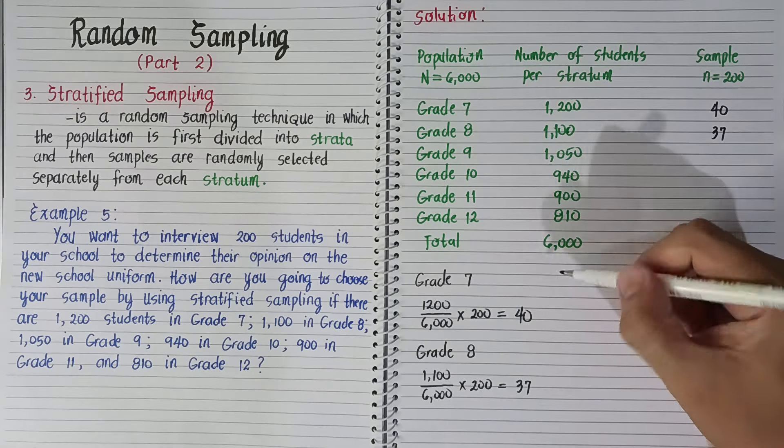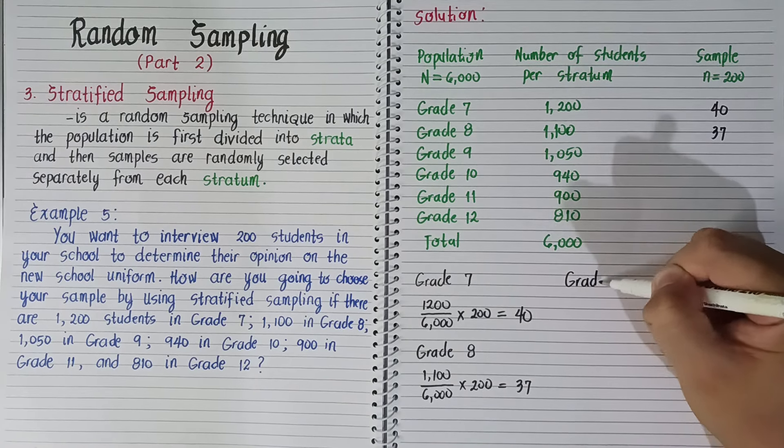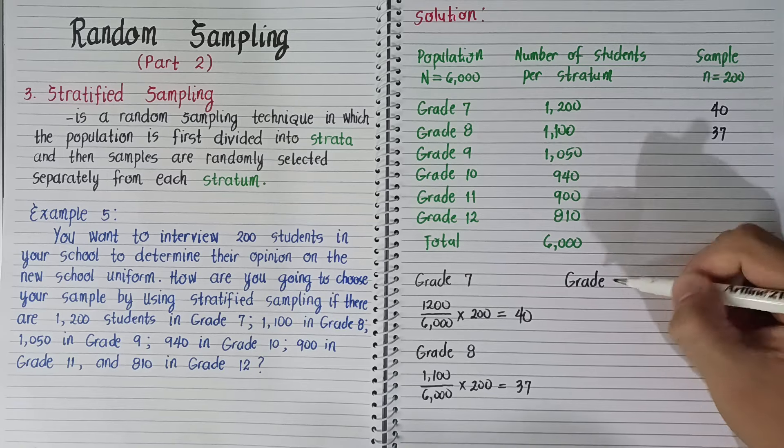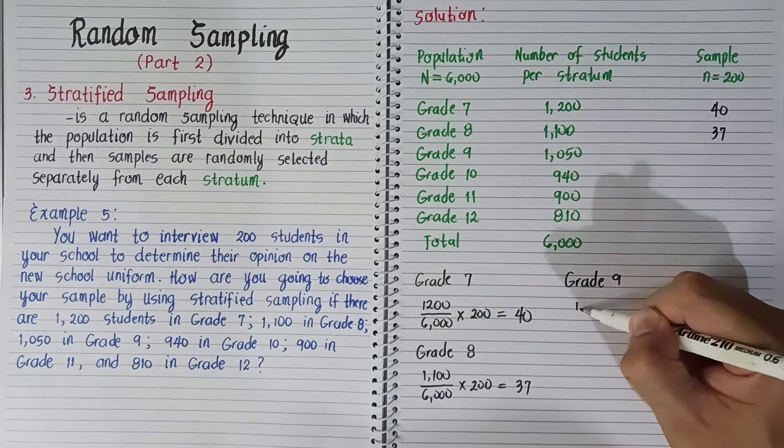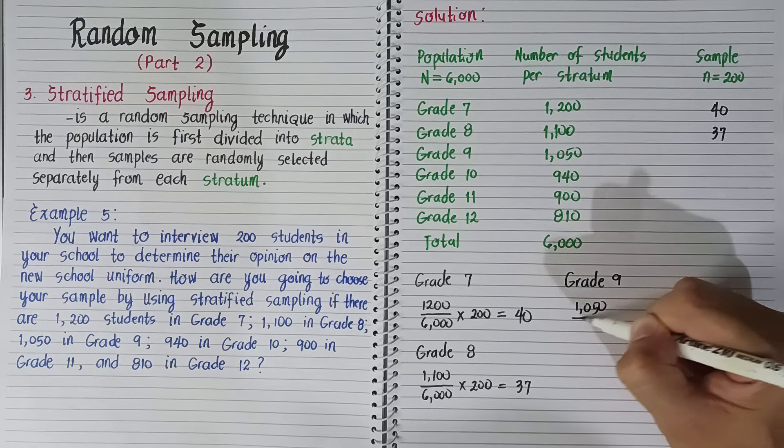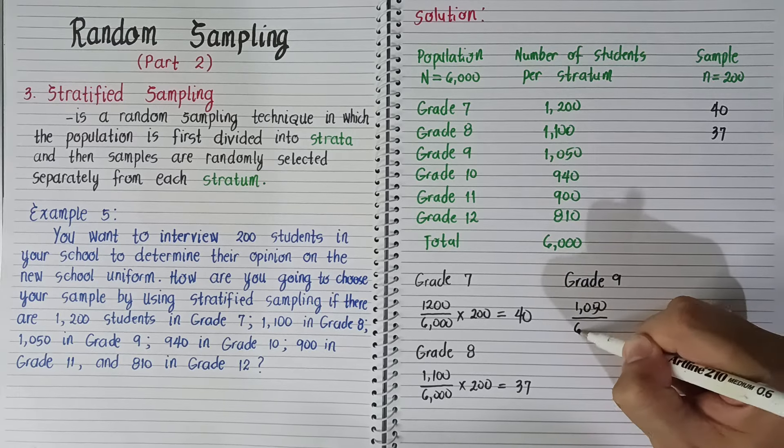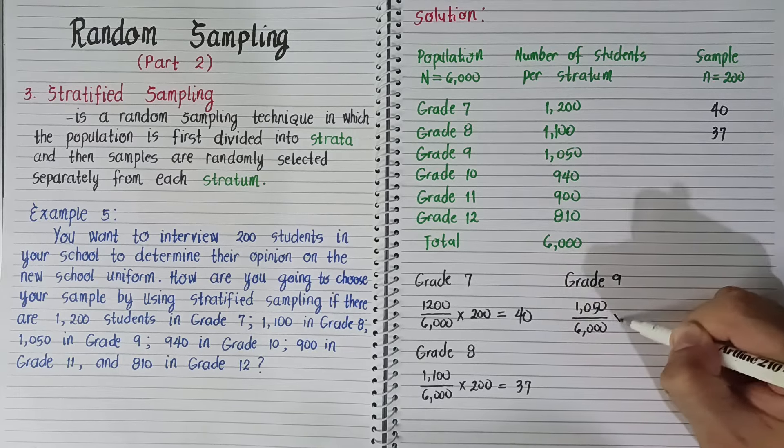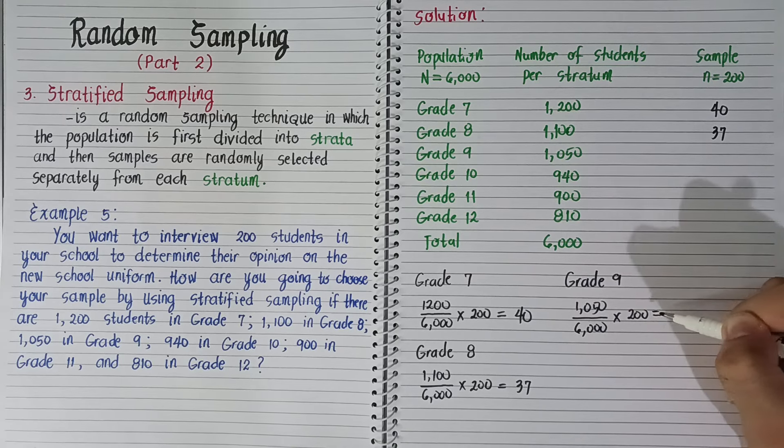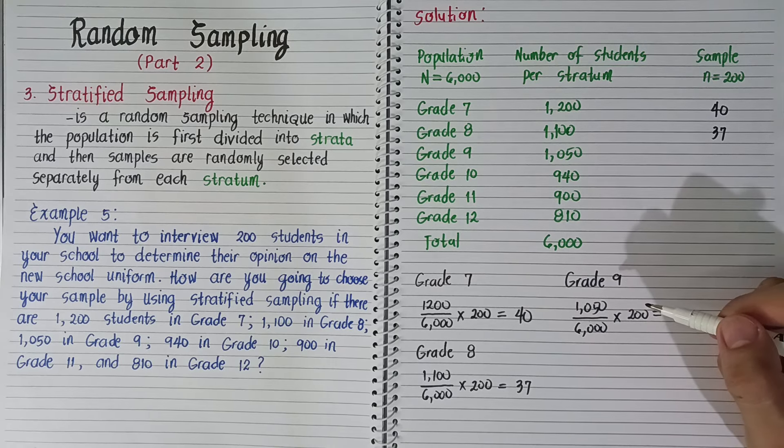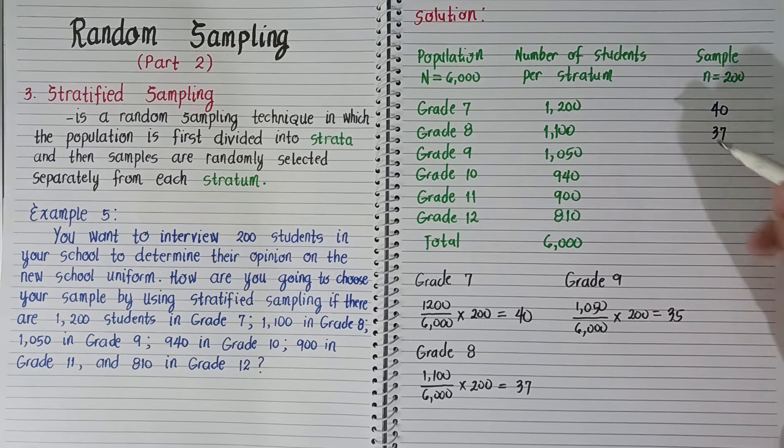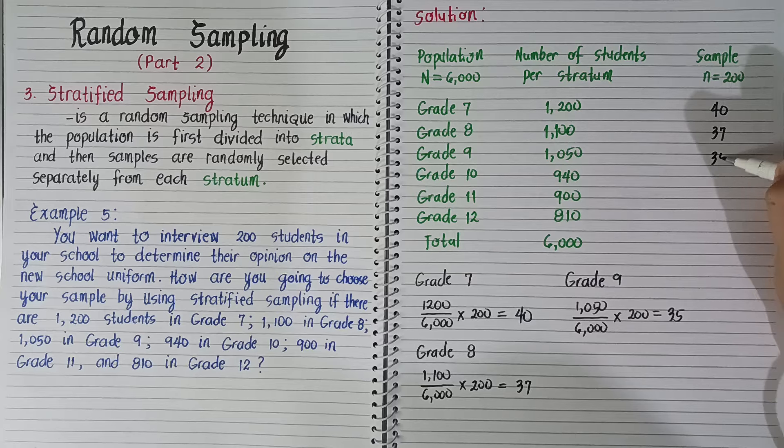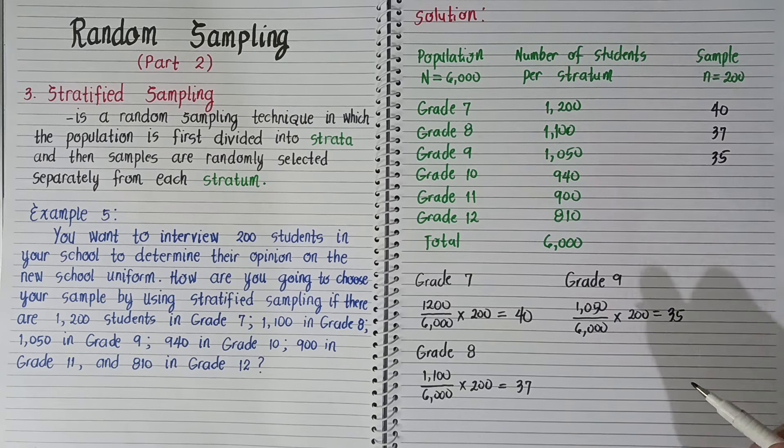Next, for grade 9, we have 1,050 divided by 6,000 times 200. This is actually equal to 35. So 35 from grade 9.